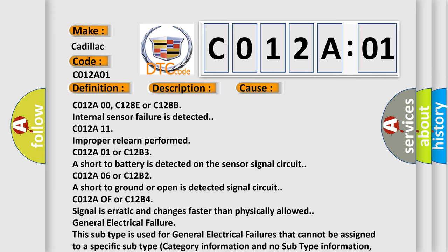C012A01 or C12B3A short to battery is detected on the sensor signal circuit. C012A06 or C12B2A short to ground or open is detected signal circuit. C012A01 or C12B4 signal is erratic and changes faster than physically allowed.